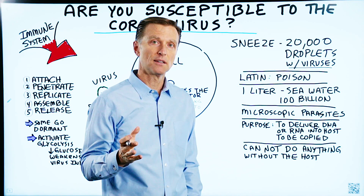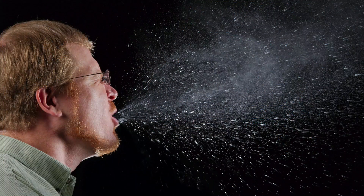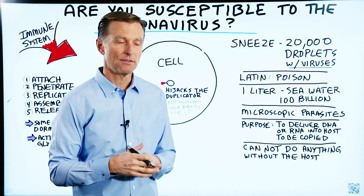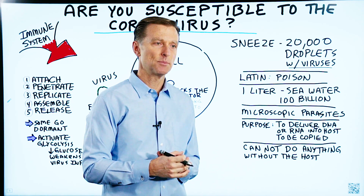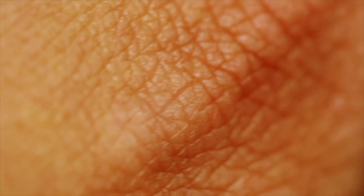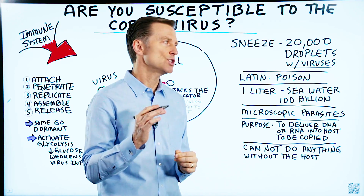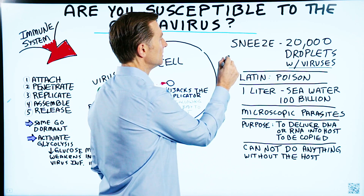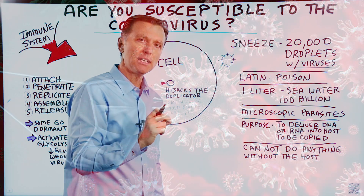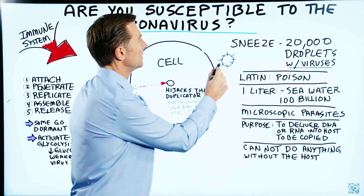Did you realize that when someone sneezes, about 20,000 little droplets containing viruses are projected through the air? That is the mode of transportation for a virus. A virus does not have wings, it doesn't have legs — it has to be propelled in the air, contacted, and put on your body's surface to somehow invade the body. Certain viruses have targets for certain tissues. If you envision the virus like a tennis ball with little spikes, these spikes have affinity for different tissues depending on what virus it is. The coronavirus has affinity for the lungs.